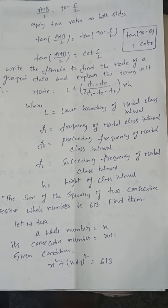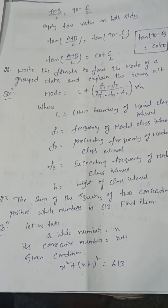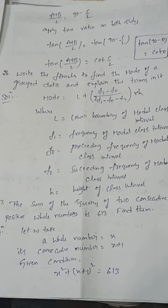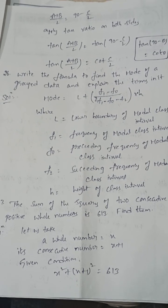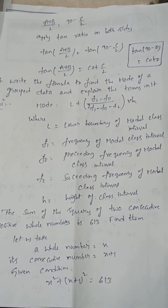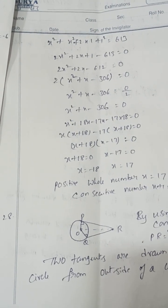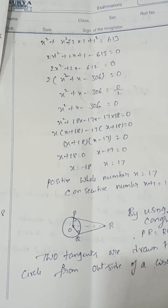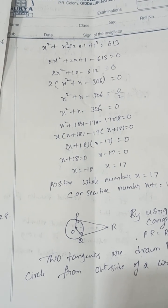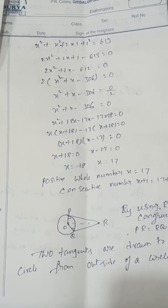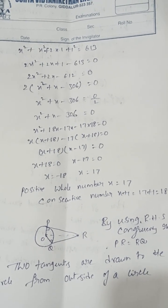The sum of the squares of two consecutive odd numbers is 613 — find them. Let the odd number be x; its consecutive odd number is x+2. So x² + (x+2)² = 613. Expanding using (a+b)² formula: 2x² + 4x + 4 = 613, giving 2x² + 4x − 609 = 0. Solving, the positive odd number is 17 and the consecutive odd number is 19.